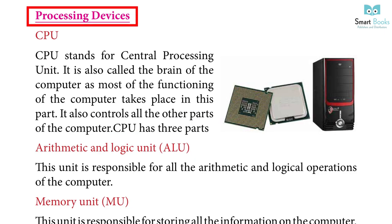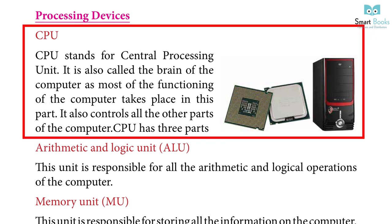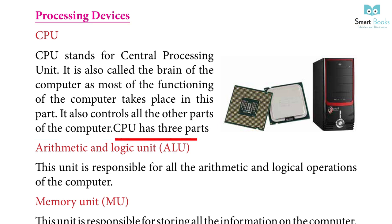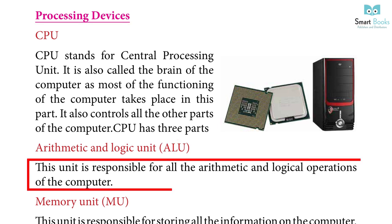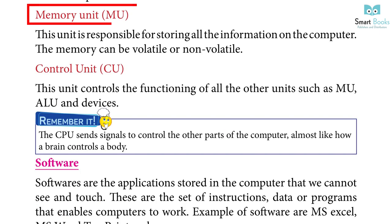Processing Devices. CPU: CPU stands for Central Processing Unit. It is also called the brain of the computer as most of the functioning of the computer takes place in this part. It also controls all the other parts of the computer. CPU has three parts: Arithmetic and Logic Unit (ALU) — this unit is responsible for all the arithmetic and logical operations of the computer.